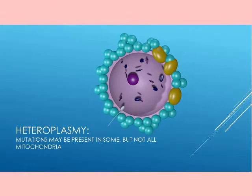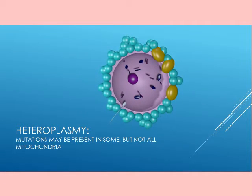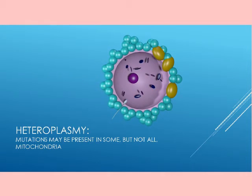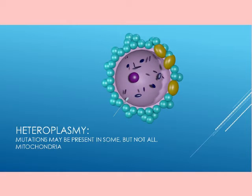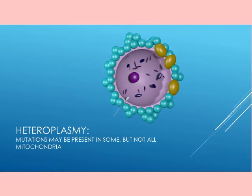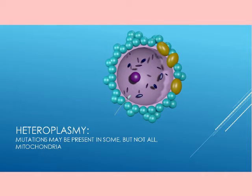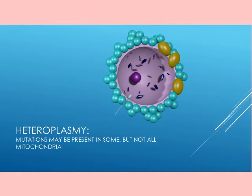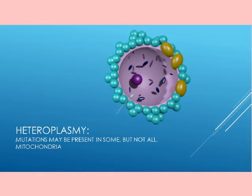It is possible for some of the mitochondrial DNA to possess mutations which other mitochondrial DNA chromosomes do not possess. Therefore, the inheritance of mitochondrial traits is complex given the number of different mitochondria which may possess different alleles of mitochondrial genes. This condition is known as heteroplasmy.